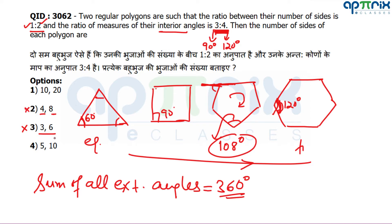Now two options remain. Let me check: for a polygon with exterior angle 36 degrees, that gives 360/36 = 10 sides. The interior angle is 180 − 36 = 144 degrees. Checking the ratio with the other polygon: 144 divided gives the 3:4 ratio satisfied. So without any n-formula, you can easily find the answer by checking interior angles directly.